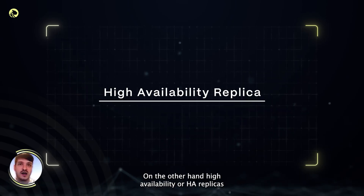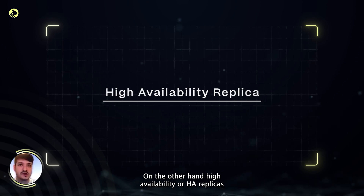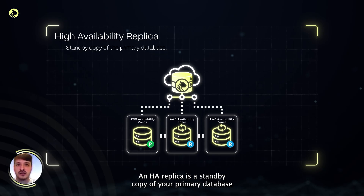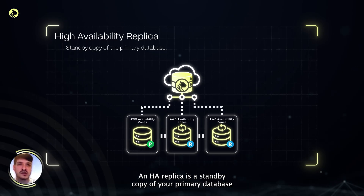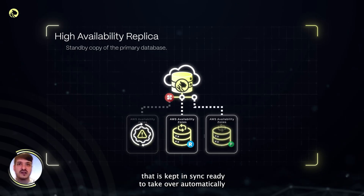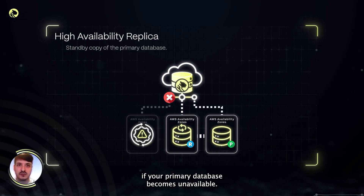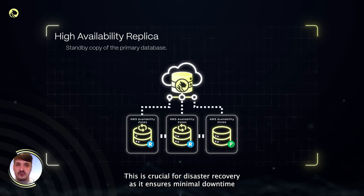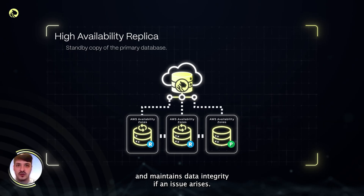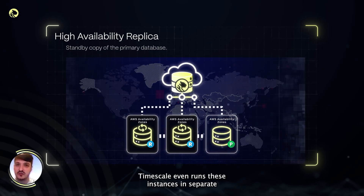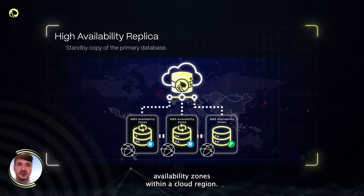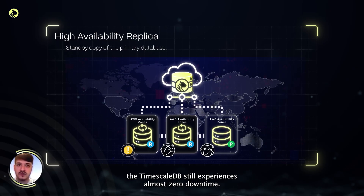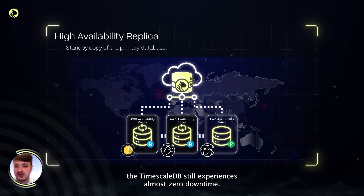On the other hand, high availability, or HA replicas, focus on reliability and resilience. An HA replica is a standby copy of your primary database that is kept in sync, ready to take over automatically if your primary database becomes unavailable. This is crucial for disaster recovery, as it ensures minimal downtime and maintains data integrity if an issue arises. Timescale even runs these instances in separate availability zones within a cloud region. Even if an entire AZ goes offline, TimescaleDB still experiences almost zero downtime.